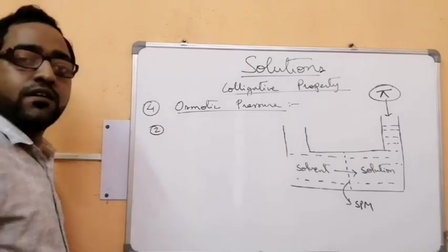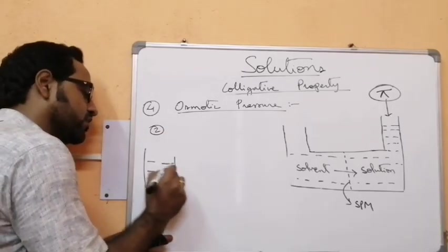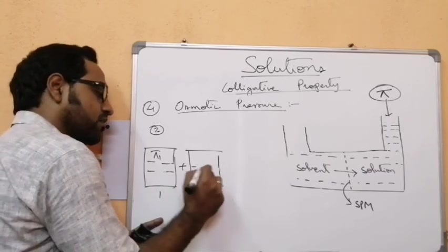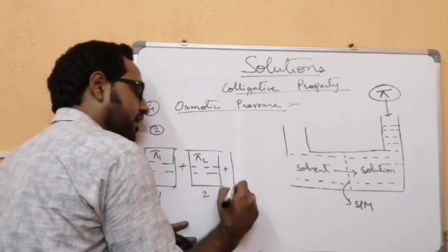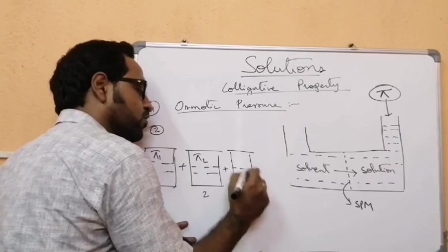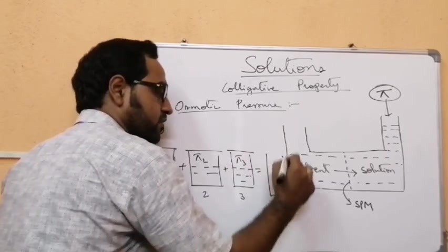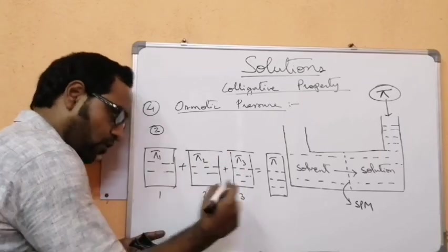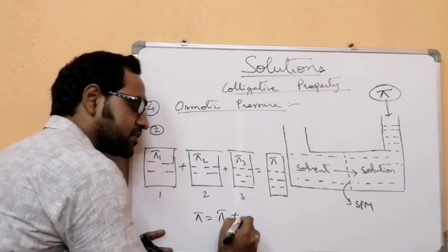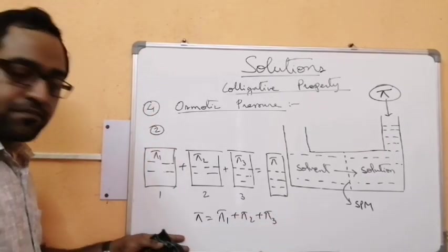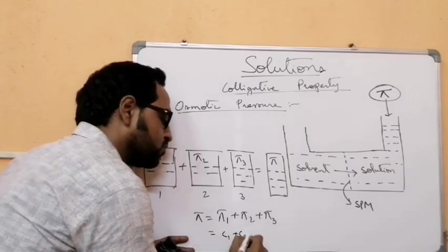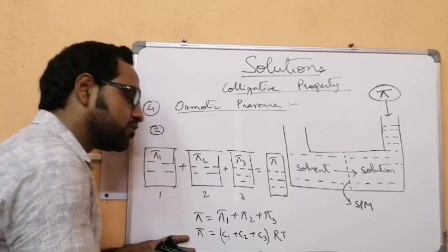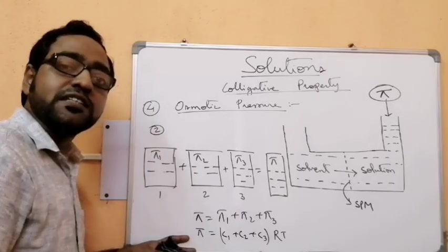The second point: if you mix solutions with osmotic pressures π₁, π₂, and π₃, the resulting osmotic pressure π = π₁ + π₂ + π₃ = (C₁ + C₂ + C₃)RT. Osmotic pressure is additive in nature — whenever we mix two solutions, the osmotic pressures add up.